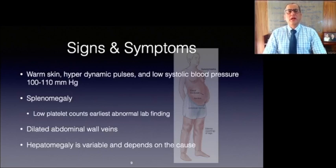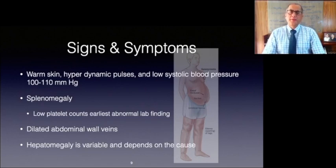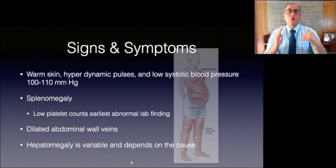Patients who are hemodynamically stable may have warm skin, hyperdynamic pulses, and low systolic blood pressure. Additionally, splenomegaly and dilated abdominal wall veins are also indicative of portal hypertension. Splenomegaly can result in sequestration of platelets from the systemic circulation, and low platelet counts may be the earliest abnormal laboratory finding. Hepatomegaly is variable and dependent upon the cause and stage of liver disease, with advanced stages showing small livers.